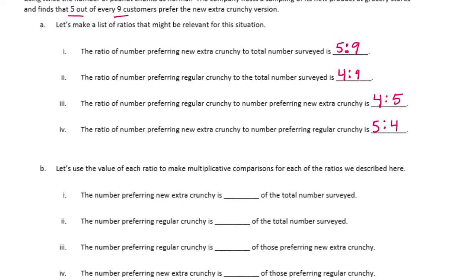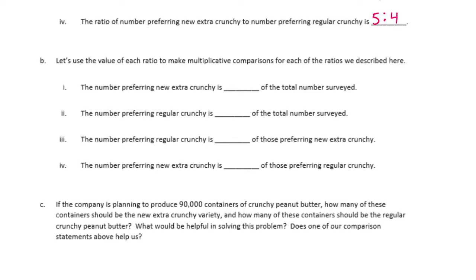You could also write these ratios using the word 'to' instead of a colon. Part B — use the value of each ratio as a fraction for multiplicative comparisons: the number preferring new extra crunchy is five-ninths of the total; the number preferring regular crunchy is four-ninths of the total; regular crunchy is four-fifths of extra crunchy; and extra crunchy is five-fourths of regular crunchy.